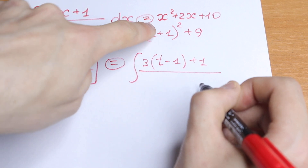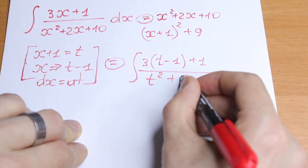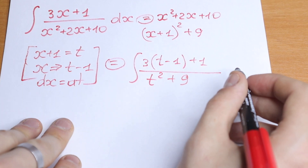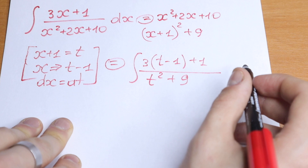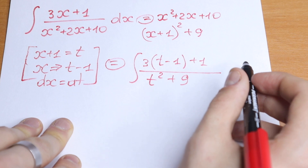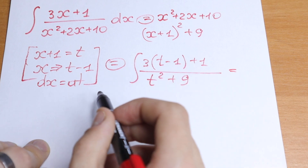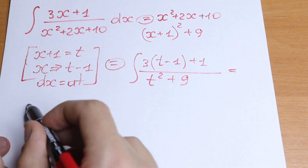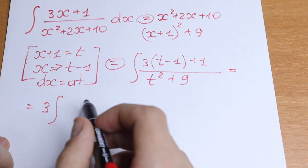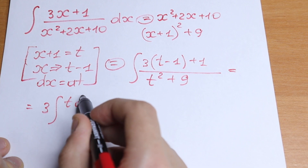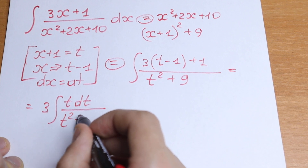Since x plus 1 equals t, our denominator becomes t squared plus 9. We can now simplify the numerator 3(t−1)+1 = 3t − 2, and rewrite the integral. We can split it: 3 times the integral of t dt divided by t squared plus 9, minus 2 times the integral of dt divided by t squared plus 9.